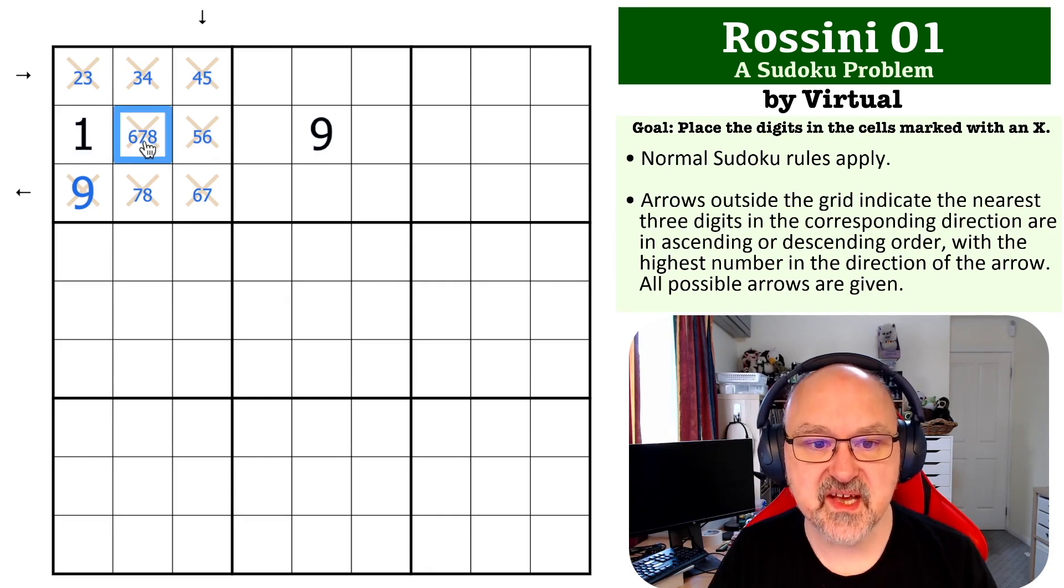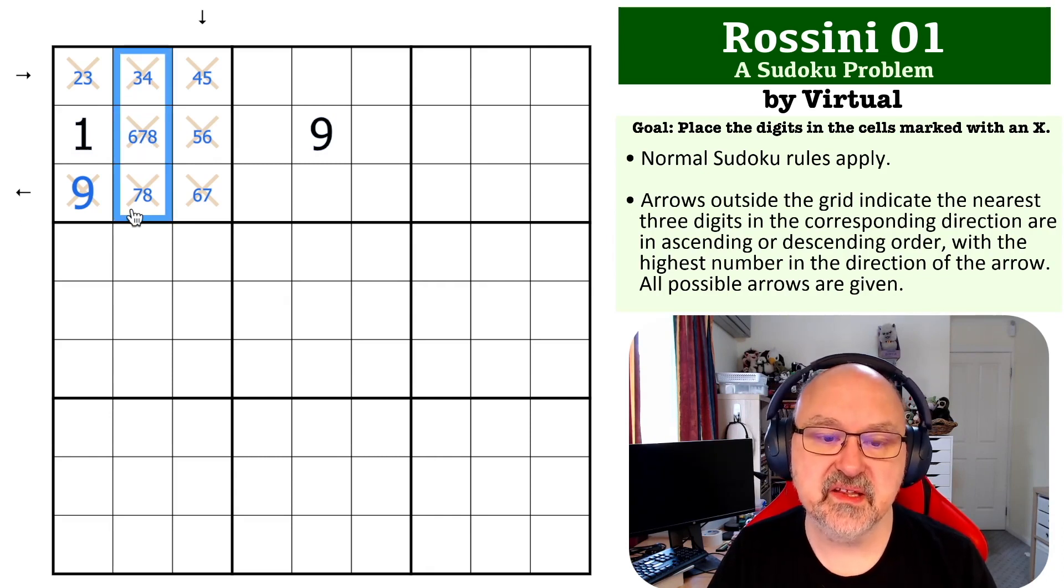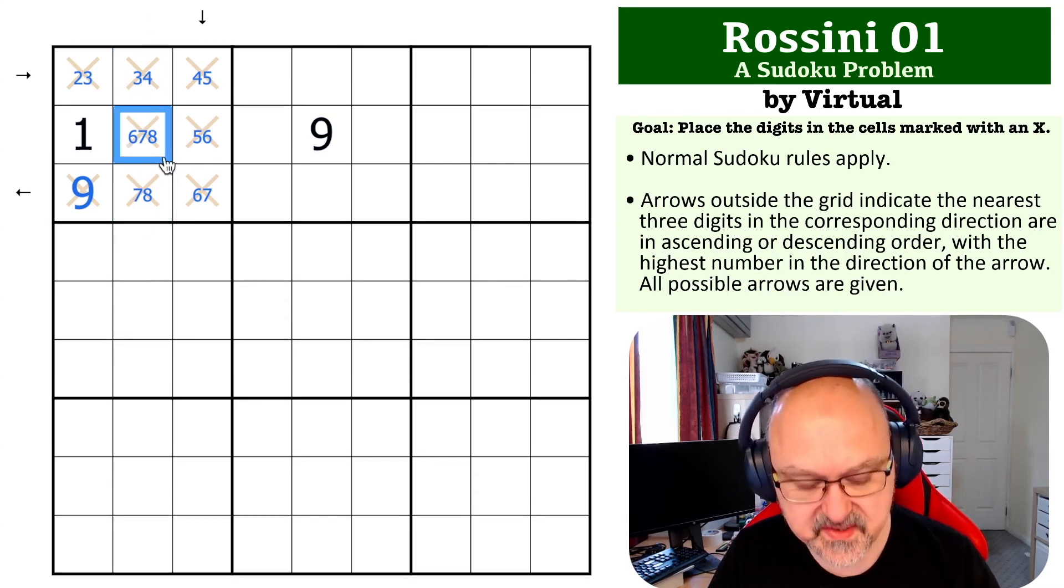Now, if this was a 6, this would be valid in this order, because we would have 3 or 4, 6, and then 7 and 8, and we would need an arrow at the top. So this can't be 6.